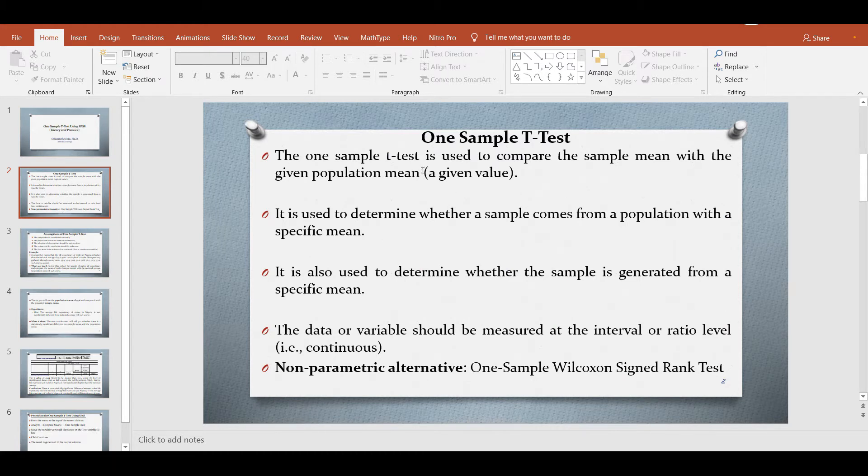Now what does one sample t-test mean? The one sample t-test is used to compare the sample mean with the given population mean of the given value. It is used to determine whether a sample comes from a population with a specific mean. It is also used to determine whether the sample is generated from a specific mean.